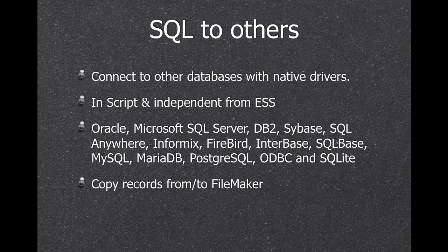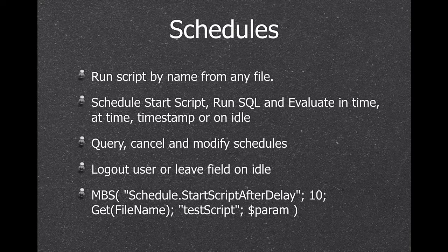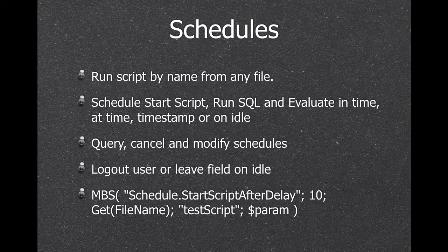We have functions to copy records to and from FileMaker and other databases. For example, if you have a MySQL database for your web store, you can go there every day and copy all of today's orders into FileMaker with one line. We can do batch transfers of records — getting a thousand records in one chunk — so it should be faster than committing each record individually.